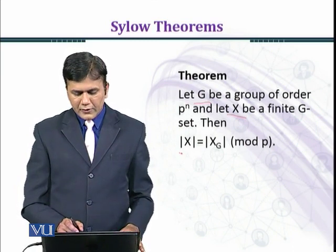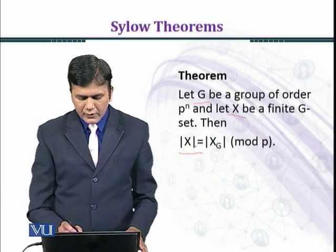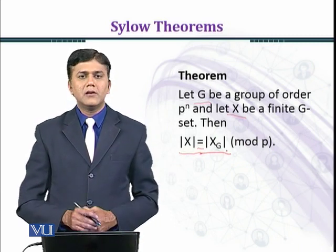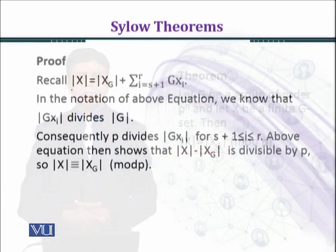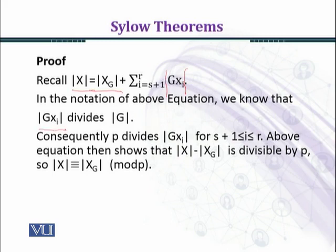Let's prove the theorem. Recall |X| = |X_G| + Σᵢ₌ₛ₊₁ʳ |Gxᵢ|. In the notation of the above equation, we know that |Gxᵢ| divides |G|. Consequently, p divides |Gxᵢ|.